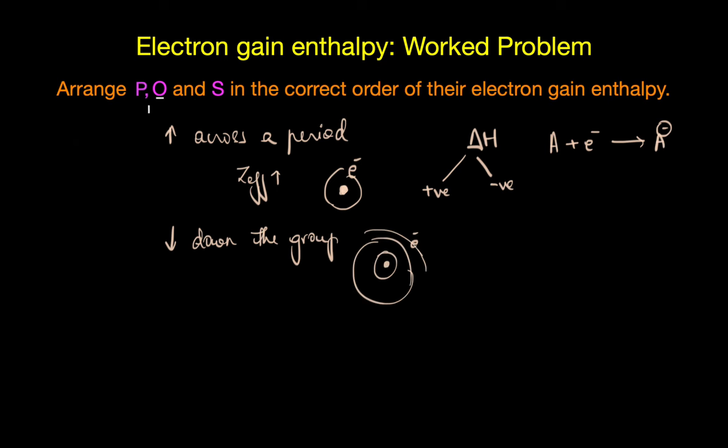So based on this, oxygen seems to have the highest electron gain enthalpy, followed by sulphur and the least would be phosphorus. But you know what? This is not the correct order.